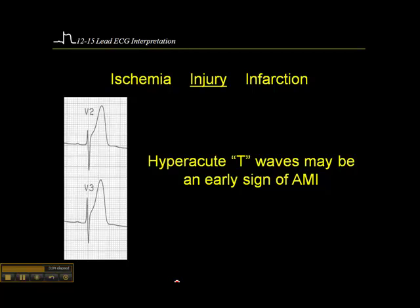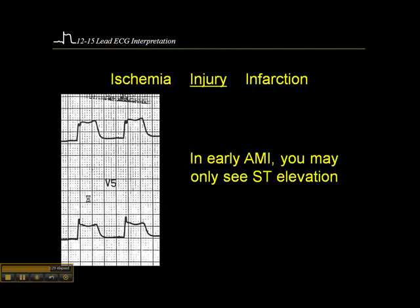In this case, we'd actually have to see them in V3 and V4 because V3 and V4 are anatomically contiguous for the anterior leads. V1 and V2 are the septal leads. In this particular case, we also happen to see ST segment elevation — here's the baseline and here's the J point roughly. So these are hyperacute T waves, but we see ST elevation with those as well. This is what you'll often see in an acute MI.